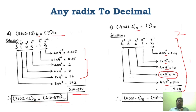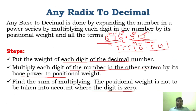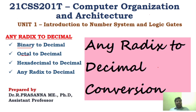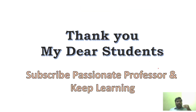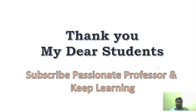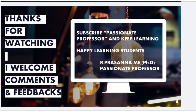Hope you understand how to convert any radix to a decimal system. We have seen binary to decimal, octal to decimal, hexadecimal to decimal, and any radix to decimal. All you have to do is use the multiplication method — write the corresponding powers, multiply with the corresponding base, and add all those things. This is a very simple conversion. Remember the logic alone. Hope this will be very useful for you. Thank you, my dear students.